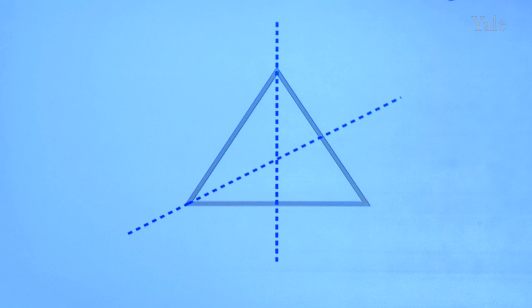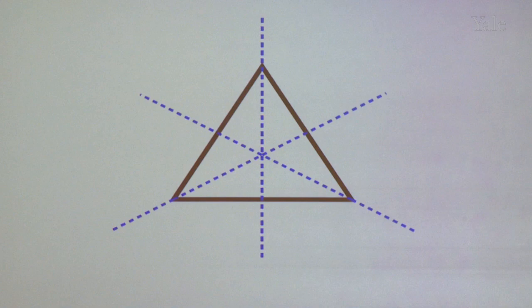For the equilateral triangle, emanating from each corner there's a line of symmetry, so there are three of these kinds of lines of symmetry. You can try to find any other ones, but that's all you're going to find.